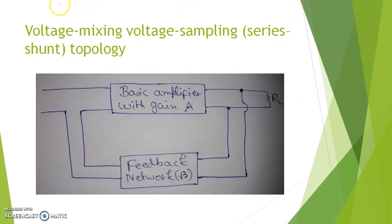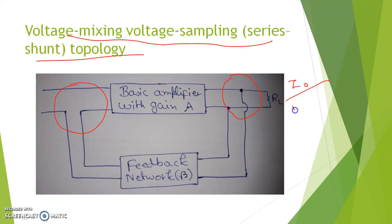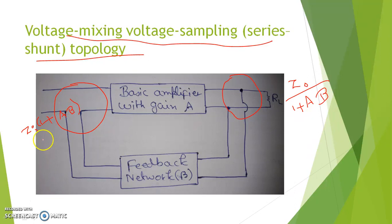This is the voltage mixing voltage sampling, or series-shunt feedback topology. The mixing network is series but the sampling network is parallel. So the output impedance in parallel will decrease by a factor 1 + Aβ — the new output impedance is Z_out / (1 + Aβ). And the new input impedance, since the input is in series connection, will increase: it becomes ZI × (1 + Aβ).